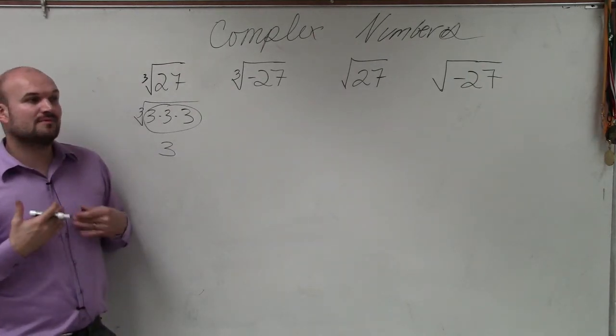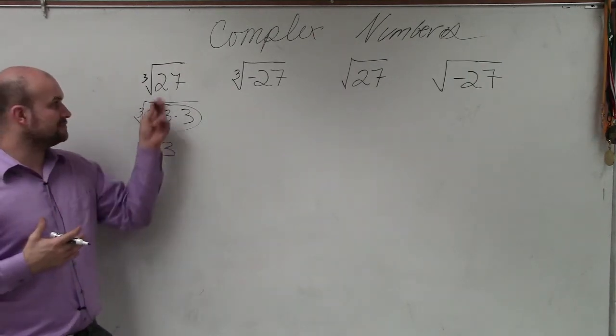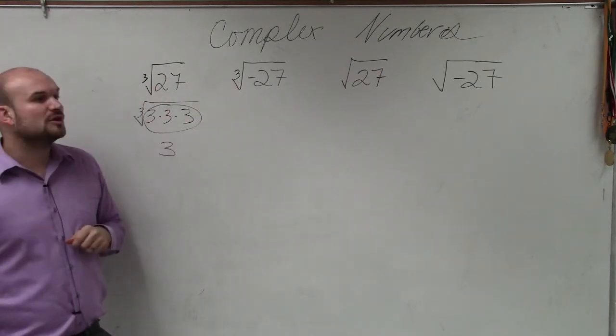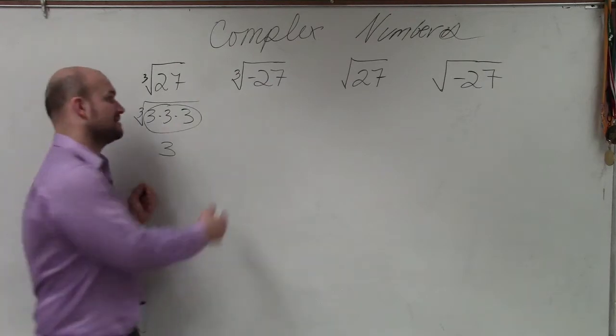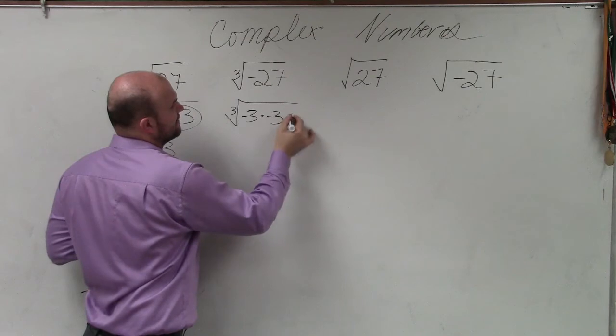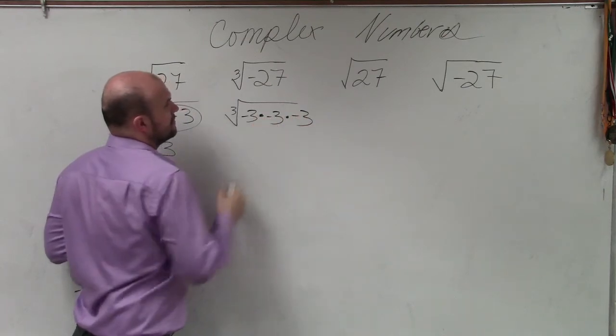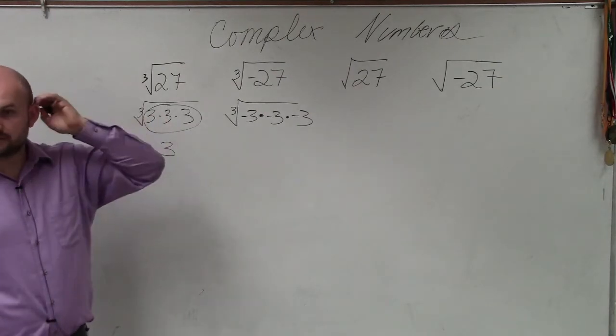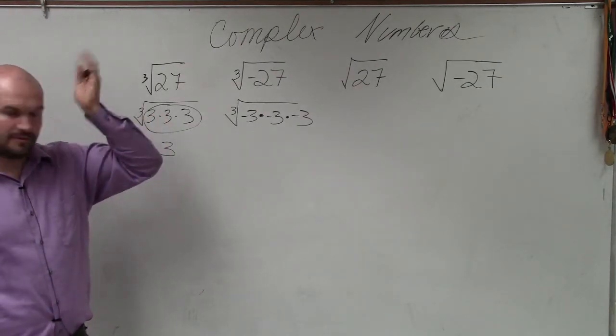Cube root says what number multiplied by itself 3 times gives you 27. Well, that's 3 times 3 times 3. Then the cube root says what number multiplied by itself 3 times gives you negative 27. Well, for an odd root, we can take the odd root of negative numbers. Because negative 3 times negative 3 times negative 3 gives us negative 27.